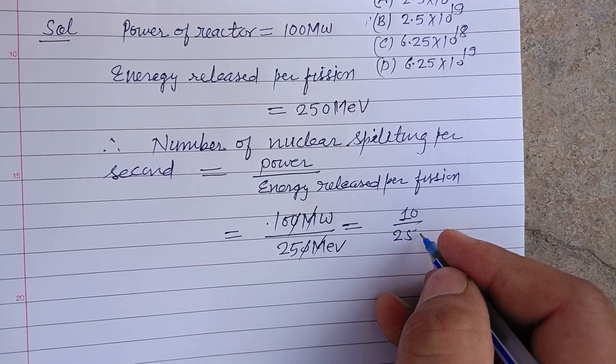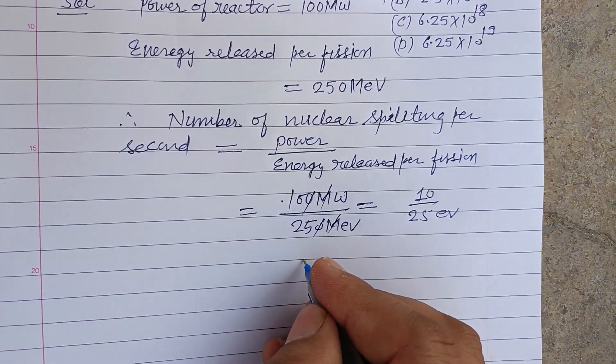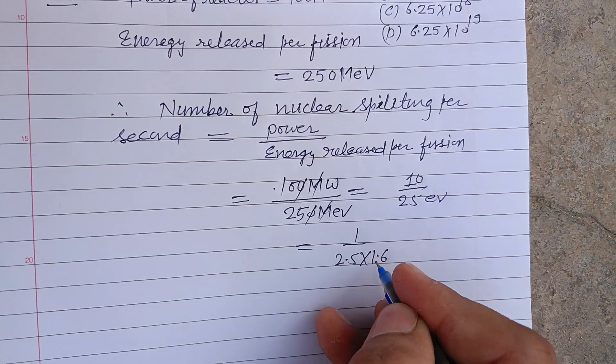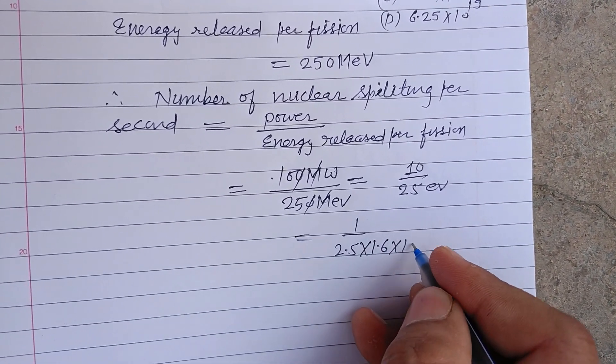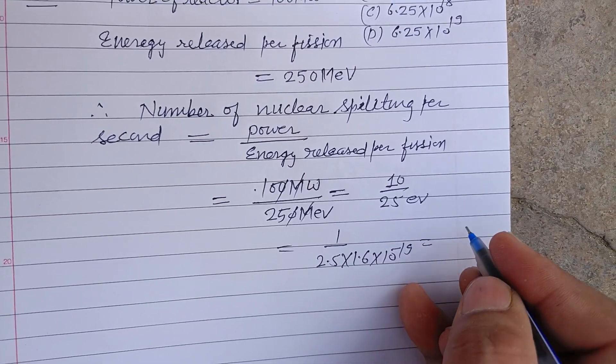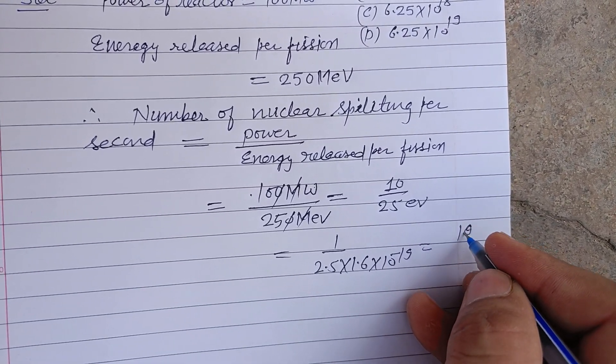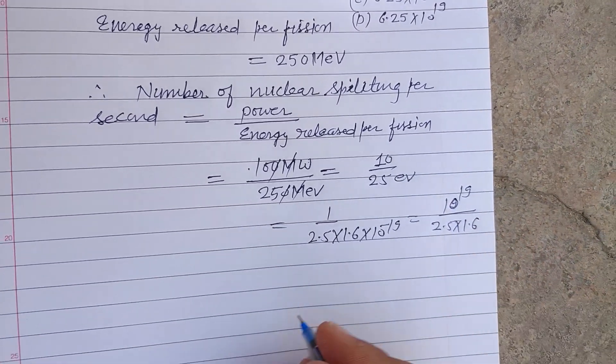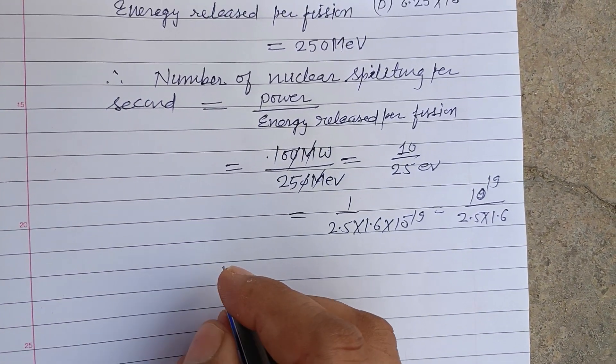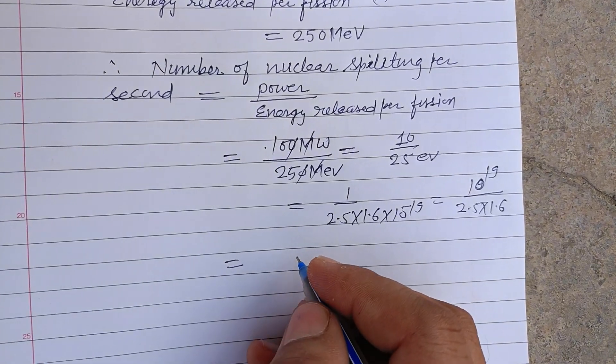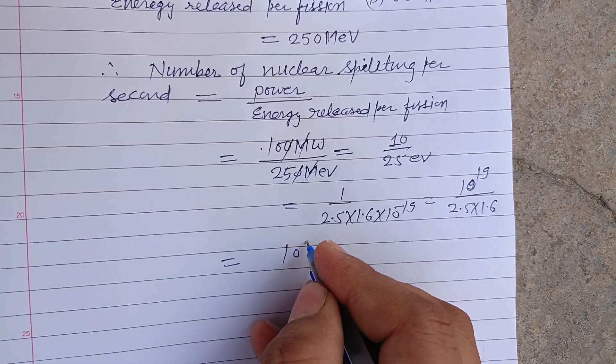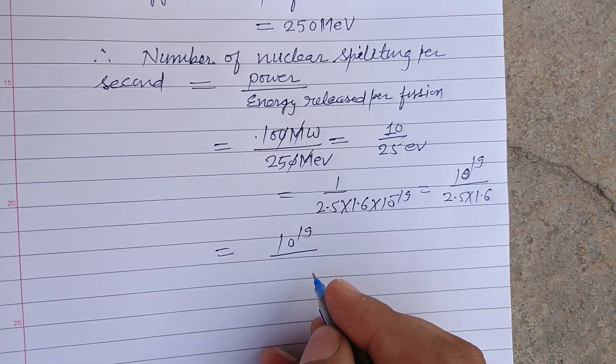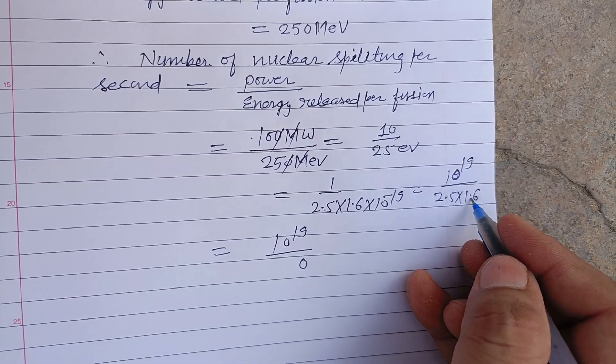One electron volt is 1.6 times 10 to the power minus 19. Therefore it becomes 10 to the power 19 upon 2.5 into 1.6, or we write it as 10 to the power 19 upon 16. 5 times 16 is 80, carry 1, 16 times 2 is